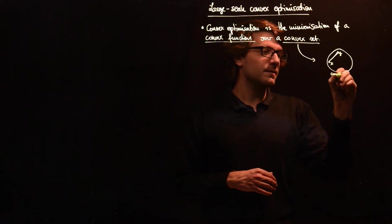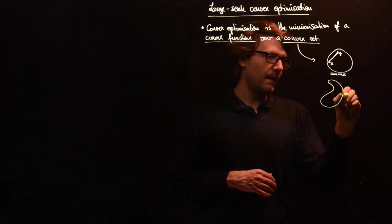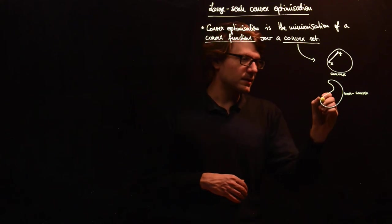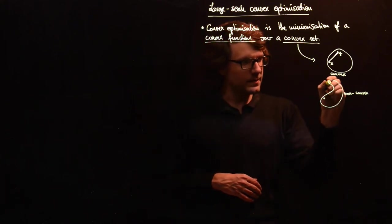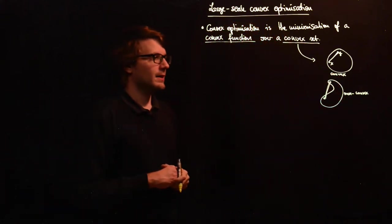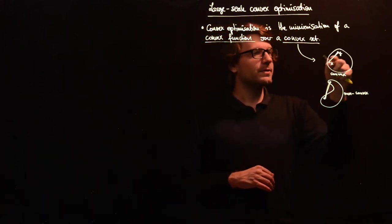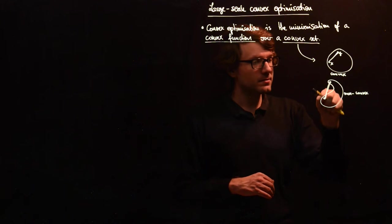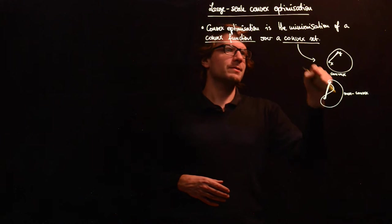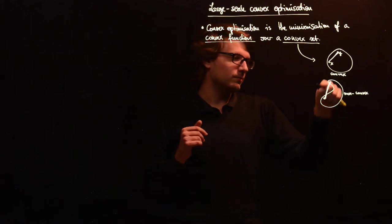So this is convex, and other sets are non-convex. Here you see that you have these two points and the straight line is not contained in the set. So if you have two points which satisfy your constraint, then you want to be able to make compromises between those two points.